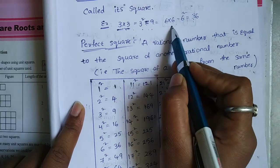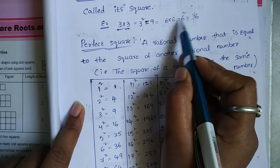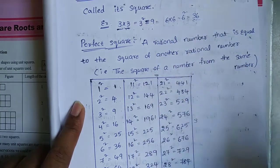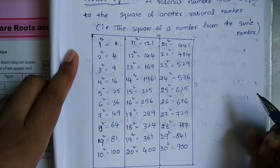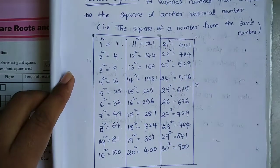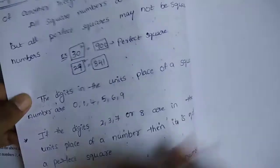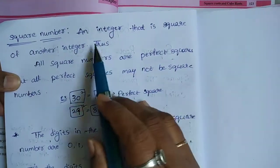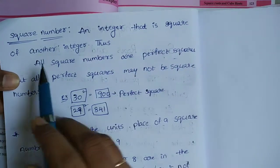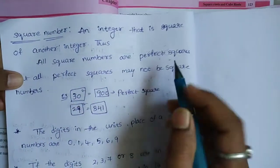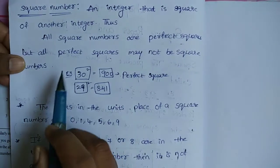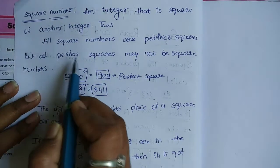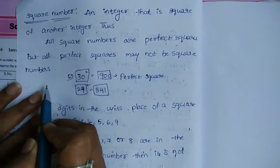6 into 6 is equal to 36, so 36 is a perfect square. A square number is an integer that is the square of another integer. All square numbers are perfect squares, but perfect squares may not be square numbers.